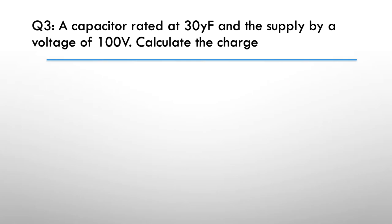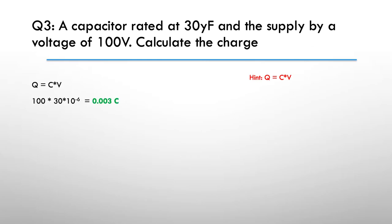Question three: a capacitor rated at 30 microfarads is supplied by a voltage of 100 volts — calculate the charge. Hint: Q equals C times V. Of course this time you won't need to transpose it. Answer: Q equals C times V, so 100 volts multiplied by a capacitance of 30 times 10 to the minus six microfarads gives us 0.003 coulomb.